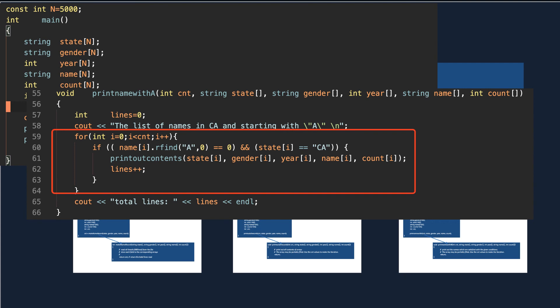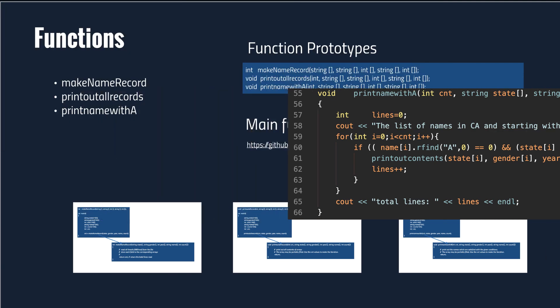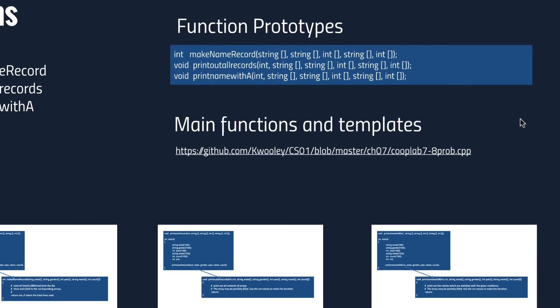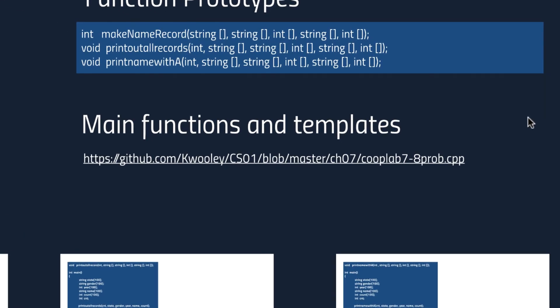The last function finds records with a given condition. In this function we use the string member function rfind to check if the first character starts with A, and also check if the state name is CA. If the given condition is satisfied, we print out those records. Here is the link to download the main function and template from the GitHub site.